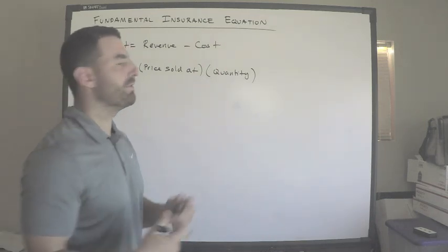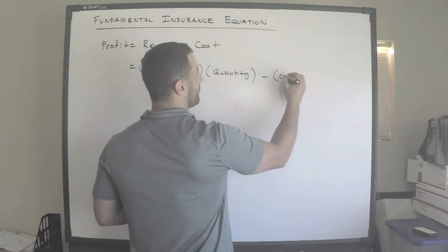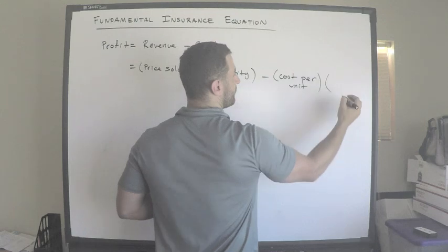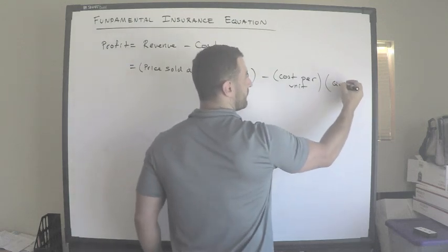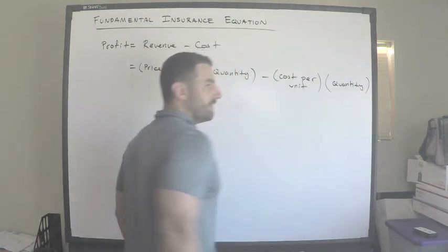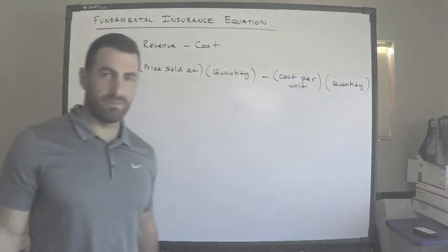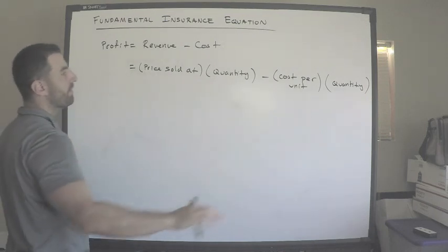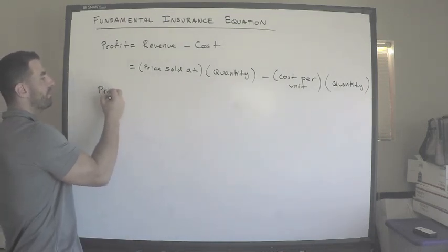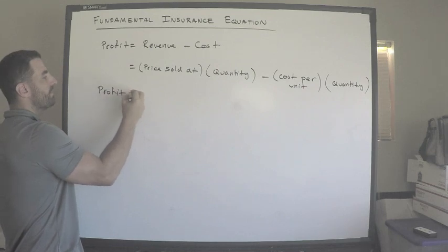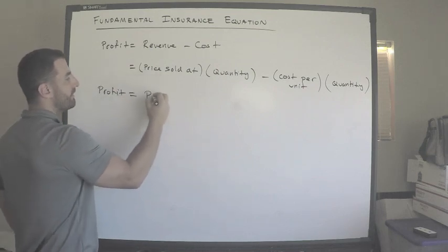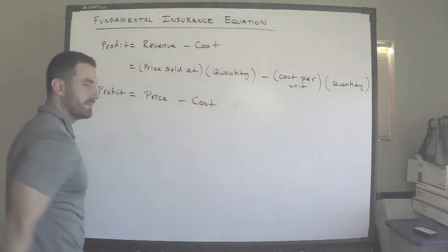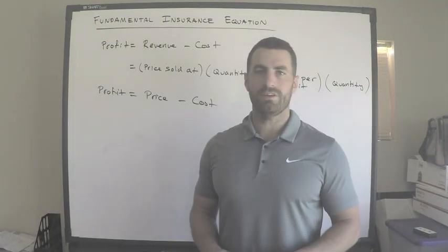The cost is whatever you pay for the material — cost per unit times the quantity sold. So the profit per unit: if I divide out all the quantities, profit per unit equals the price you're selling at minus the cost. Nothing new under the sun — this is essentially profit equals revenue minus cost.